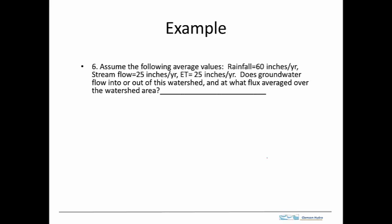This problem involves trying to understand what's happening in the subsurface by measuring things at the surface. Basically, we've got some measurements of rainfall, streamflow, and ET at the surface, and we're asking whether we can use this information to determine whether the groundwater is leaving the watershed or perhaps flowing into the watershed.